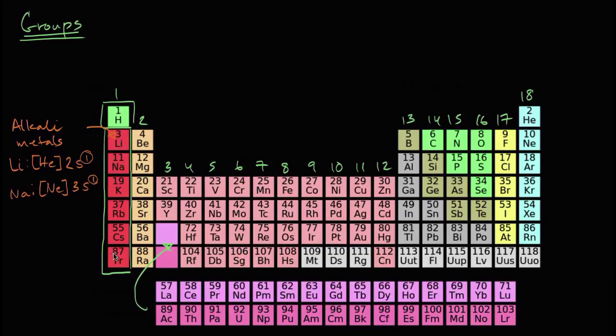So all of these elements in orange right over here, they have one valence electron. And they're trying to get to the octet rule, this kind of stable nirvana for atoms. And so you can imagine that they're very reactive. And when they react, they tend to lose this electron in their outermost shell.